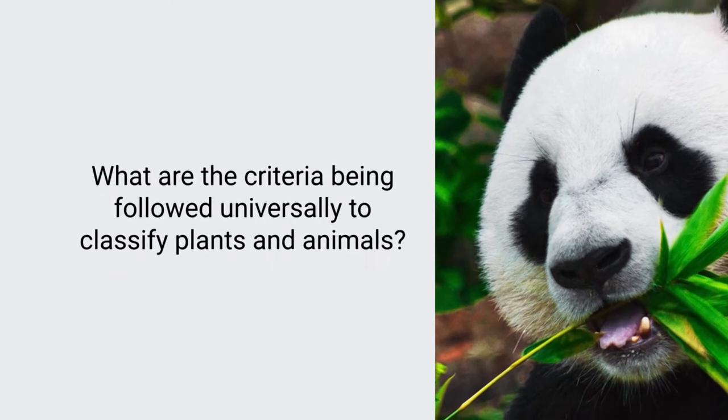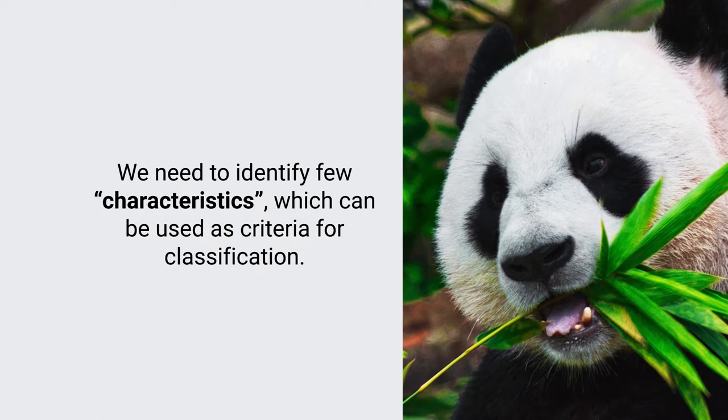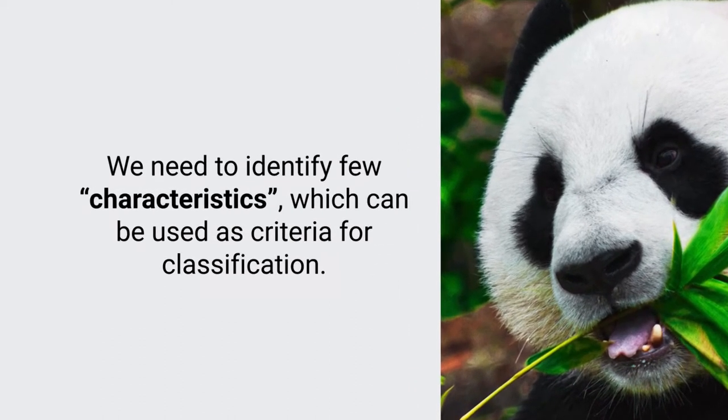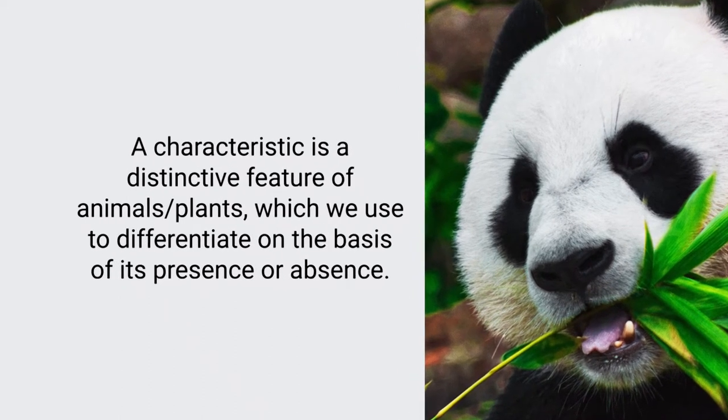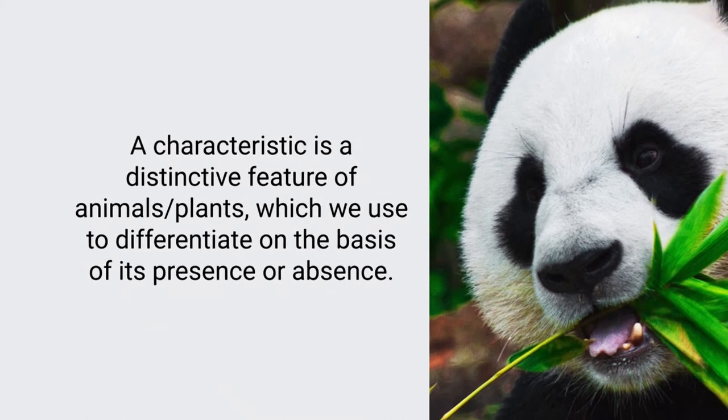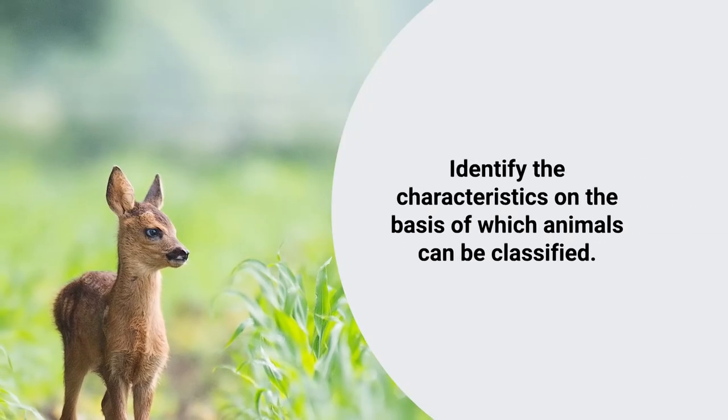You need to bring all those criteria together and design activities to engage every learner. Moving ahead on content, you can ask: what are the criteria followed universally to classify plants and animals? Students may say there are certain characteristic features. A characteristic is a distinctive feature of an animal or plant which we use to differentiate on the basis of its presence or absence. Ask your students to identify the characteristics on the basis of which animals can be classified.